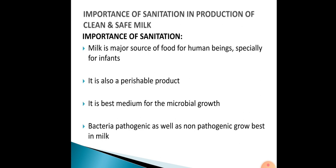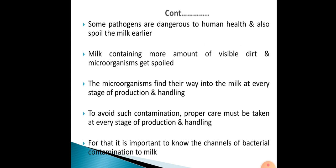Milk is a major source of food for human beings, especially for infants. It is also a perishable product and the best medium for microbial growth. Bacteria — pathogenic as well as non-pathogenic — grow in milk. Some pathogens are dangerous to human health and also spoil the milk earlier. Milk containing more visible dirt and microorganisms gets spoiled sooner.